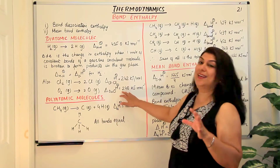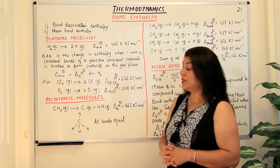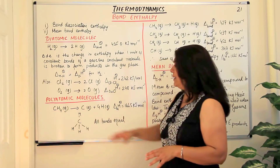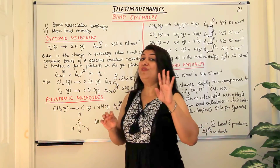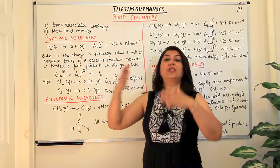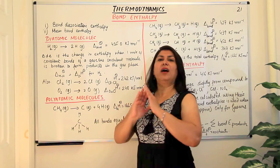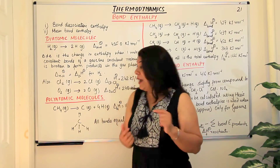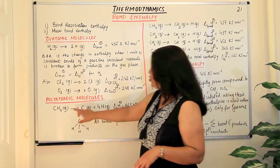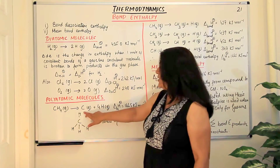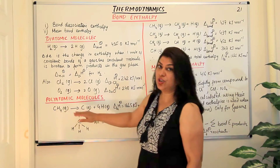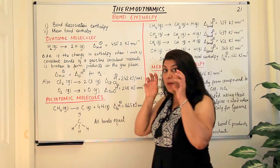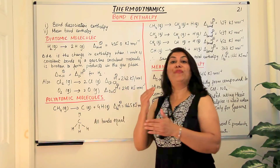Now we come to polyatomic molecules — molecules which have more than two atoms, for example methane. In methane, all four hydrogens are attached in a tetrahedral fashion and they are identical, so logically the energy required to break each bond should be equal. But what we find is that the total bond enthalpy — the enthalpy of atomization in methane, giving one carbon atom and four hydrogen atoms all in the gaseous state — is 1665 kJ per mole. Yet when carried out in steps, the bond enthalpy of each bond is different.